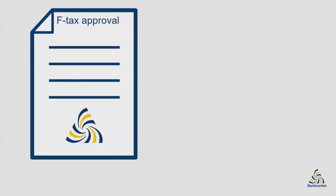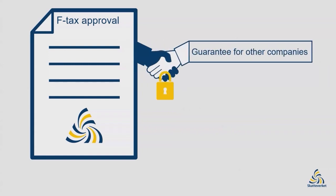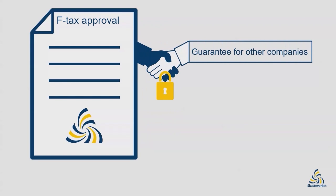First of all we need to explain the concept of F-tax approval, because it is an important concept. Having F-tax approval means that your company is responsible for paying its own preliminary tax, and if you're a sole trader it also means that you pay your own social security contributions. F-tax approval serves as a guarantee for other companies that they won't be responsible for deducting preliminary tax and paying social security contributions when they hire you.